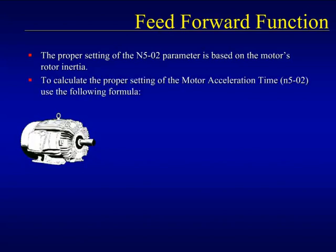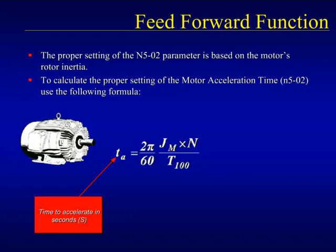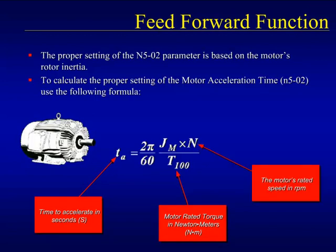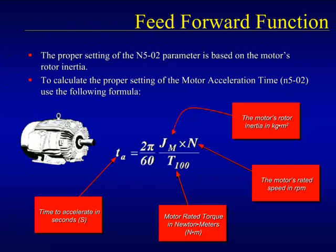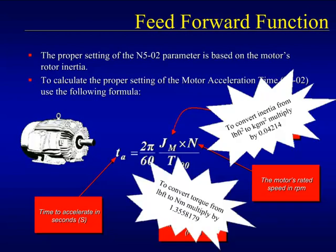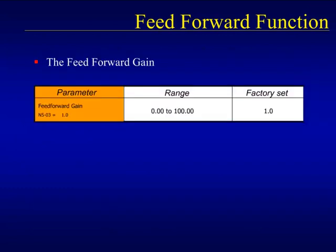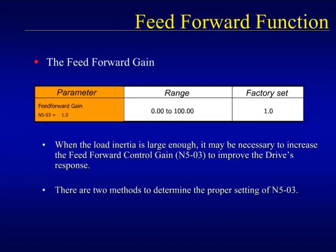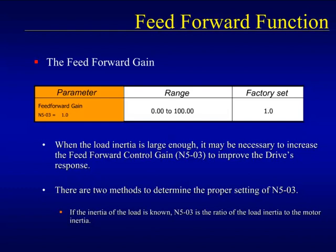Calculation of N5-02 will require the use of the formula shown here. T_A is the program time to accelerate to speed. T_100 is the motor's rated full load torque. N is the rated speed of the motor. J_M is the rotor inertia of the motor and can be found by contacting the motor manufacturer. The formula uses symmetric units so the English symmetric conversions for both the torque and inertia are also shown. Parameter N5-03 is the feed forward gain parameter. When the load inertia is larger than the motor's rotor inertia, it will be favorable to include it as part of the feed forward's compensation calculation. The proper setting of N5-03 can be reached one of two ways: if the ratio between load and rotor inertia is known, set that ratio as the feed forward gain; if the load inertia is not known, use the technique shown on the next slide to measure it.